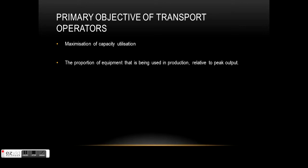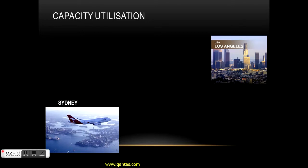The primary objective of a transport operator is to maximize capacity utilization - that is, the proportion of equipment being used in production relative to peak output. In the case of a taxi with four seats, maximum capacity utilization means having four paying passengers in those seats. With only three passengers, you're not maximizing the use of that mode of transport.